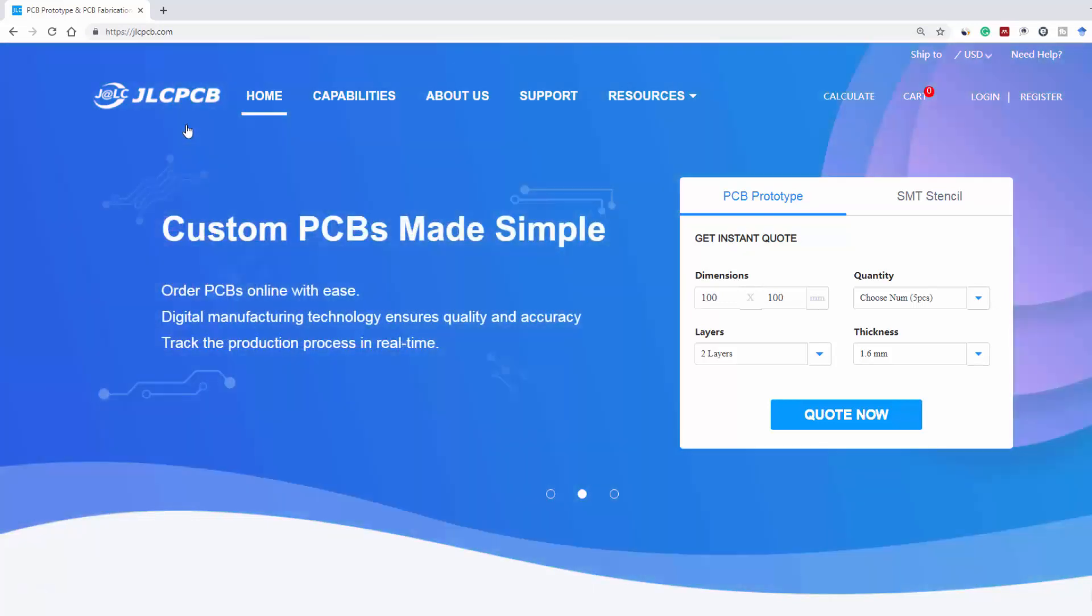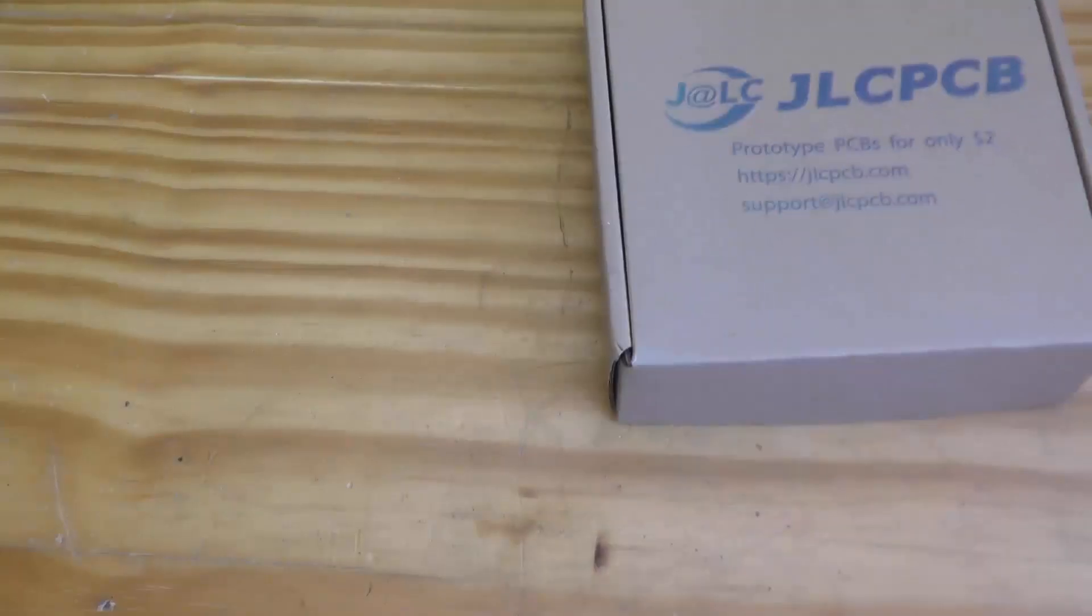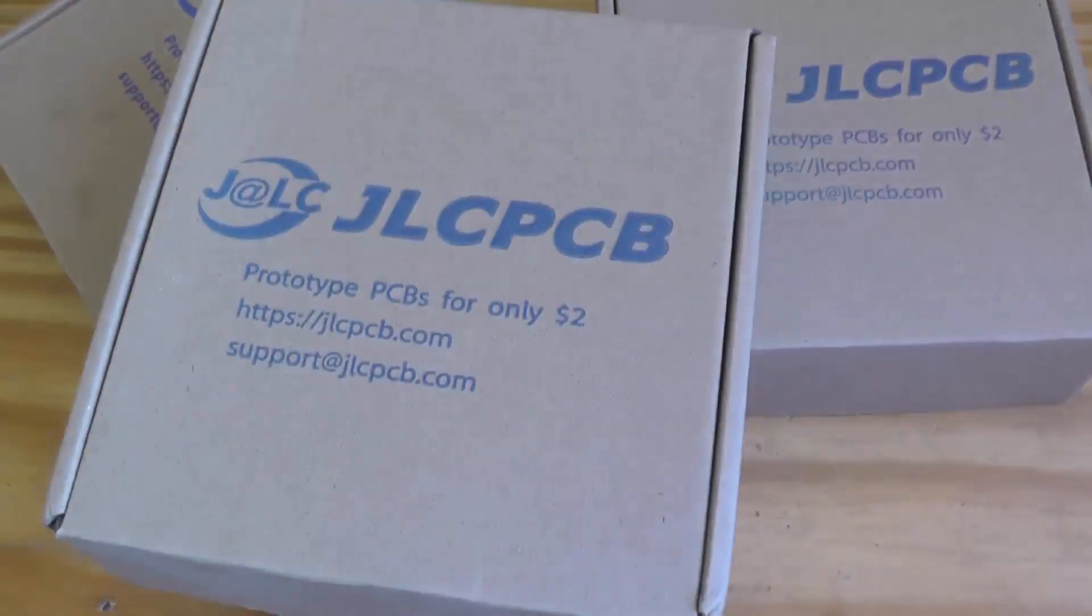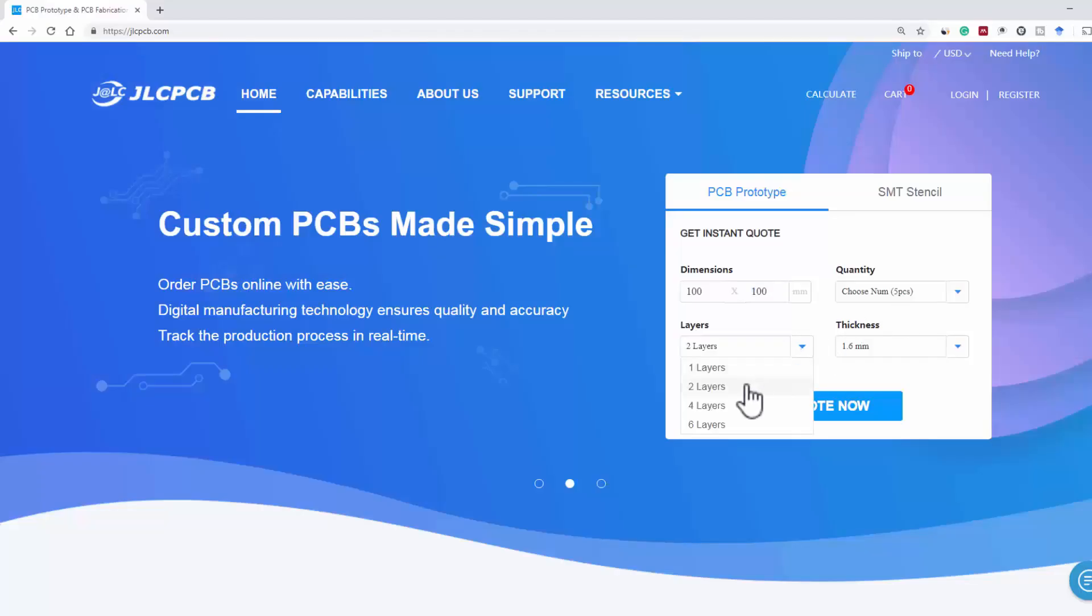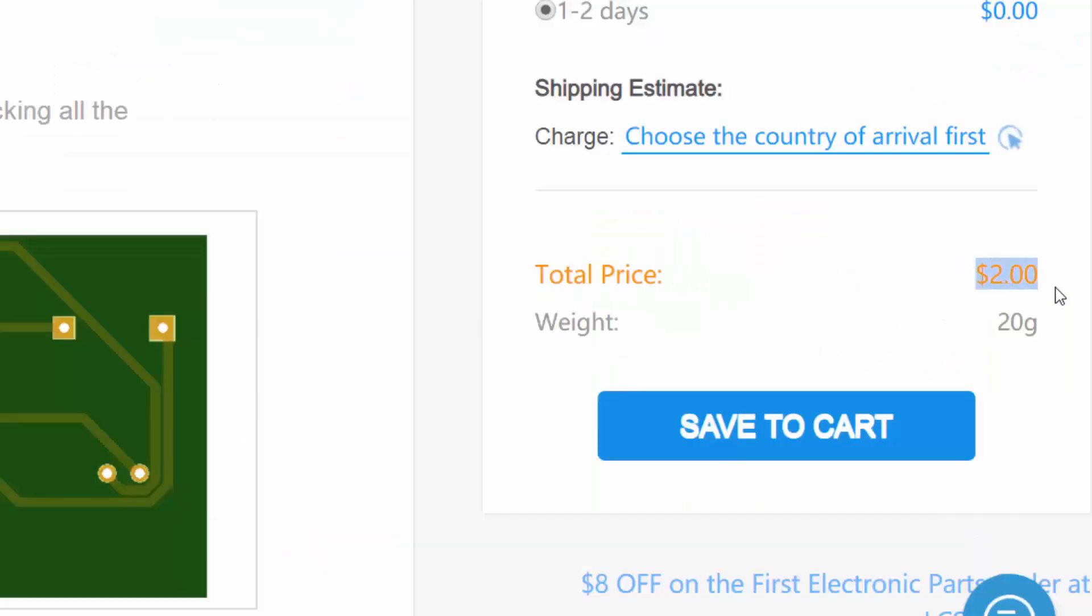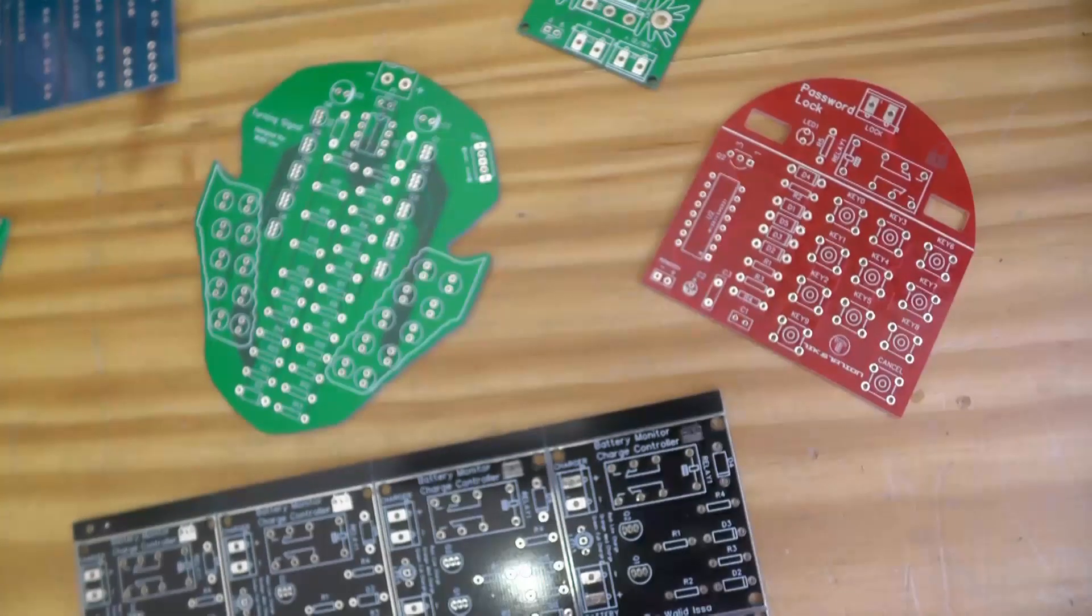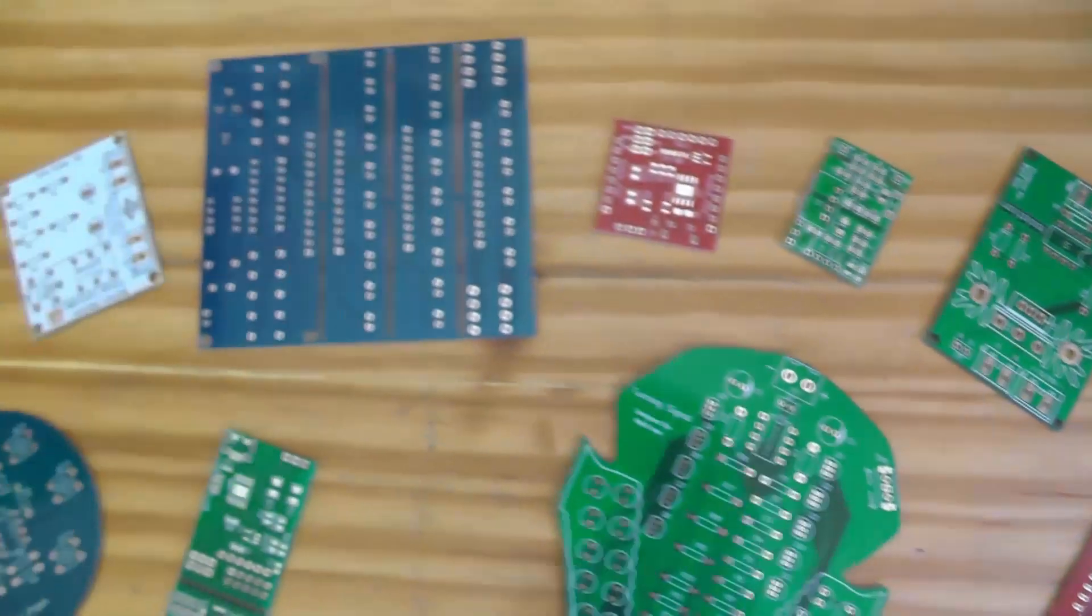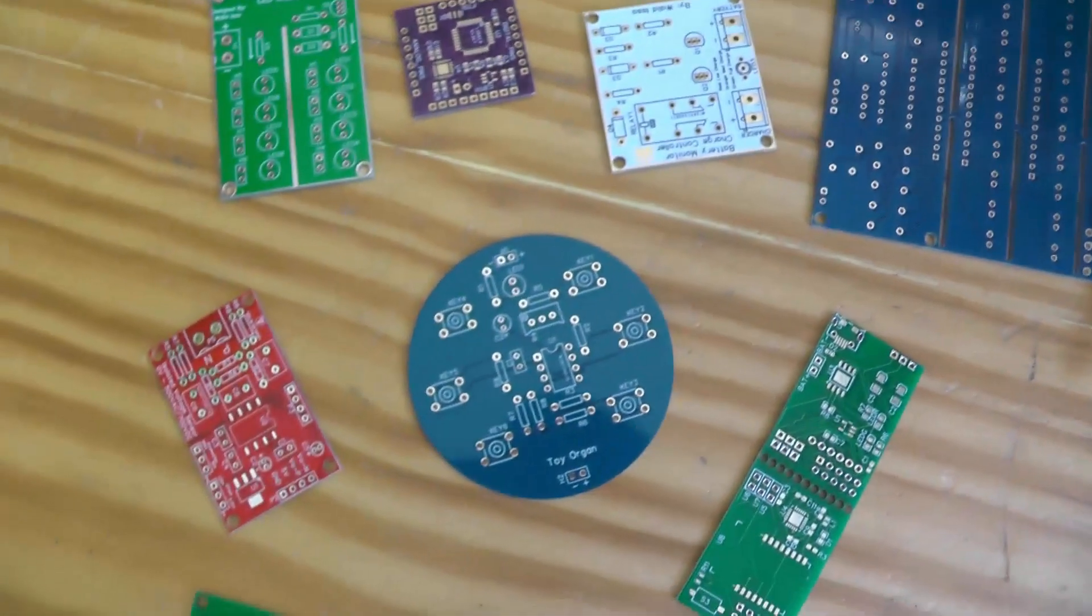This video is sponsored by JLC PCB, the biggest PCB manufacturer from China who manufactures 10 PCBs with dimensions of 10 by 10 centimeter for just two dollars. The new thing now is you can choose any color and the price will stay as two dollars.